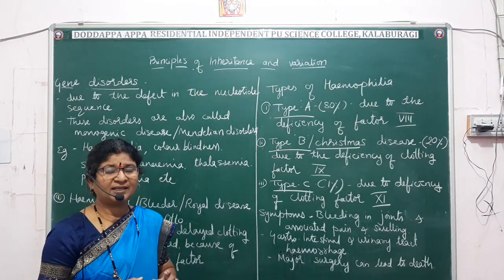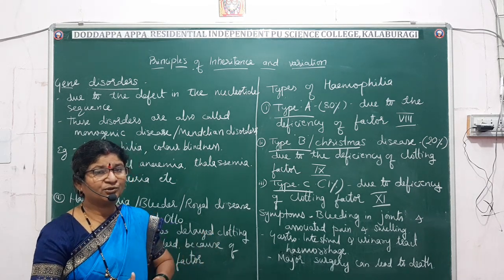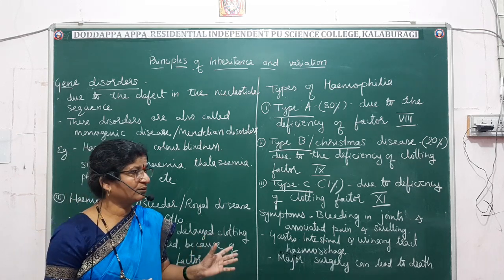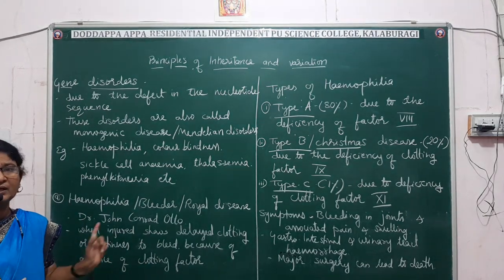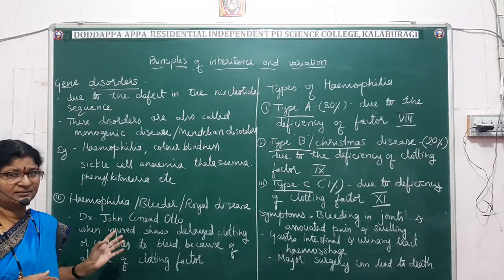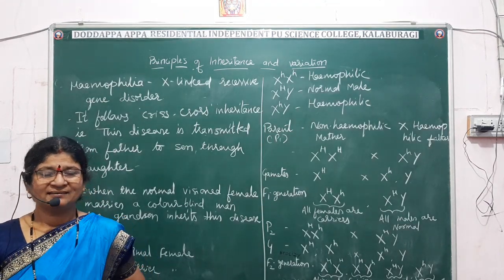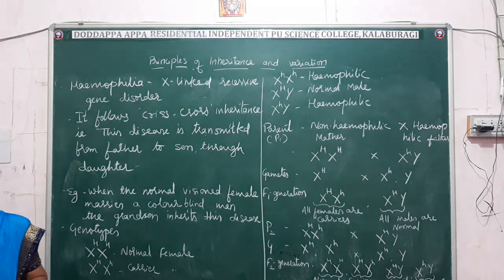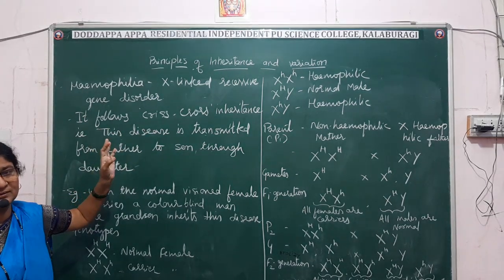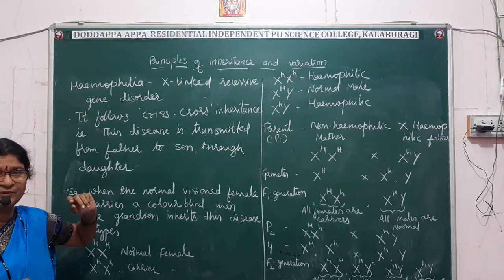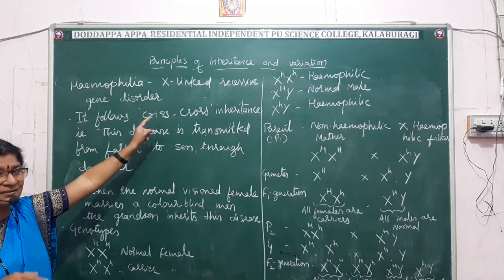Hemophilia is a sex-linked recessive gene disorder. The gene responsible for hemophilia is present on the X chromosome, so it is X-linked. As established, the X chromosome is transmitted from father to daughters and from mother to sons. That is why the occurrence of this disease is more common in males than in females.